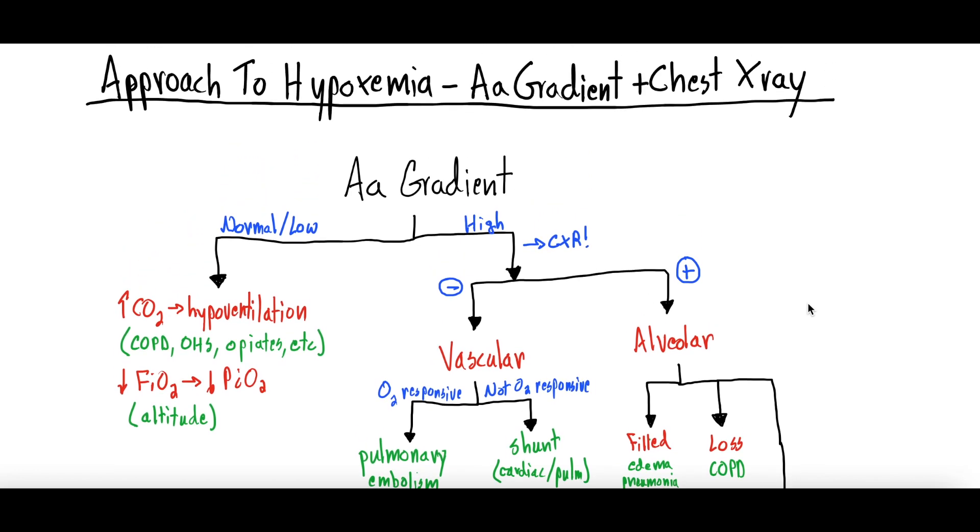Hey everybody and welcome back to another video. Today we're going to be talking about the approach to hypoxemia using the A-a gradient and a chest x-ray. This is going to be another video targeting more of those in medicine or medical education or healthcare, but again as always we welcome everyone who's interested to check it out. This is going to be one way you can approach the patient with hypoxemia or low blood oxygen levels, and this approach is going to simply use the A-a gradient which we talked about in a previous video. We will link that in this video's description, so we're not going to go into what the A-a gradient is.